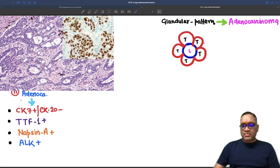So what are other IHC markers which will be positive in adenocarcinoma? It will be positive for cytokeratin 7 plus. But remember, it will be negative for cytokeratin 20. They will be positive for thyroid transcription factor 1, napsin A positive and anaplastic lymphoma kinase positive. So these are the IHC markers for the lung adenocarcinoma.